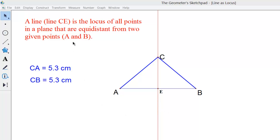A line is the locus of all points in a plane that are equidistant from two given points, and in our example it's point A and point B.